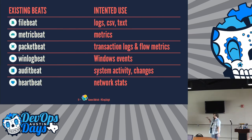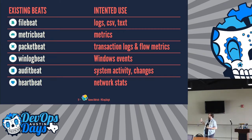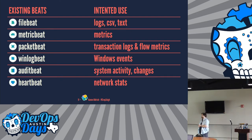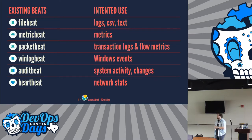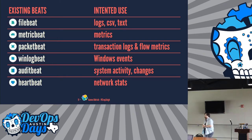We started with PacketBeat — the original project that eventually got acquired by Elastic — dealing with network traffic. We branched that out and realized people want to send log files, so we have FileBeat. We have MetricBeat for metrics. WinLogBeat, because it turns out Windows logs are special. AuditBeat, which is a specialized metric dealing with AuditD in your system metrics. And HeartBeat for monitoring whether your system is up and up the way you want it to be.